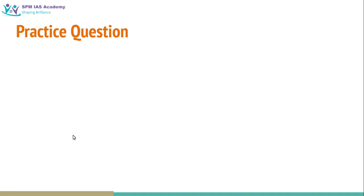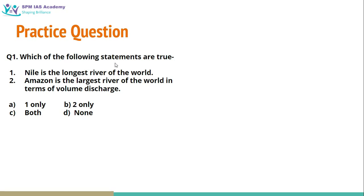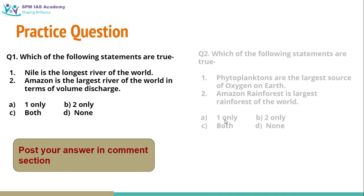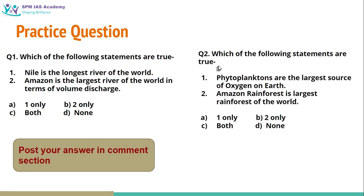Let us have practice questions on the basis of this topic. Which of the following statements are true: the Nile is the longest river of the world, while the Amazon River is the largest river of the world in terms of volume discharge? You can post your answer in the comment section. Next question: which of the following statements are true — phytoplanktons are the largest source of oxygen on Earth, and the Amazon rainforest is the largest rainforest of the world?